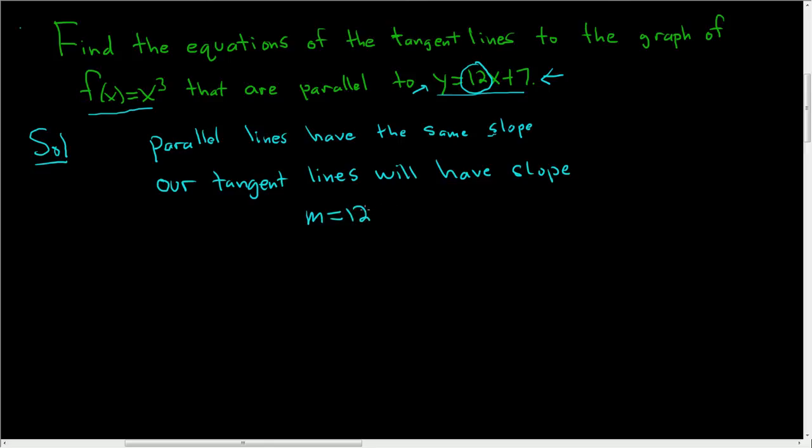So we have a slope. The only thing necessary to find the tangent line now is to find a point. So we need to use some calculus. Recall that the derivative f'(x) is the slope of the tangent line at x. In this case, it's just 3x².